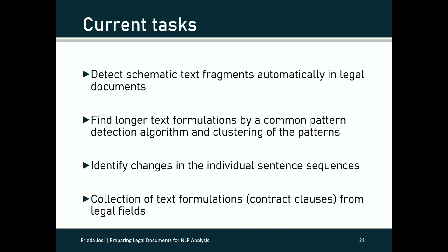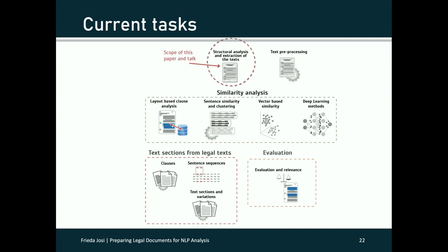The tasks for which we use these methods are listed here. We want to detect recurring text fragments automatically in legal documents. We are working on finding longer text formulations by a common pattern detection algorithm and clustering of the patterns. To do this, we look for frequently occurring sentences that follow each other in the document, and in these sentence sequences we want to identify changes. In this way, we identify common text sections in legal documents and the individual characteristics and variations of each section. One result should be a collection of text formulations or contract clauses from the legal field. With this collection, new contracts should be able to be checked automatically. Here is a visual overview of our current task for which we already use the pre-processing methods presented here, but we have not yet completed all of these tasks. There is always room for improvement, and we are working on it.